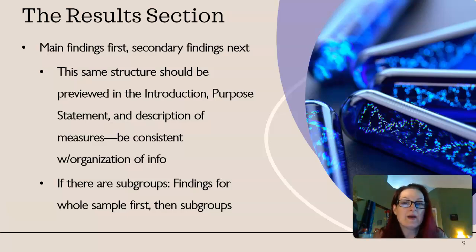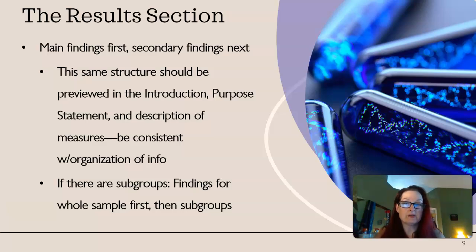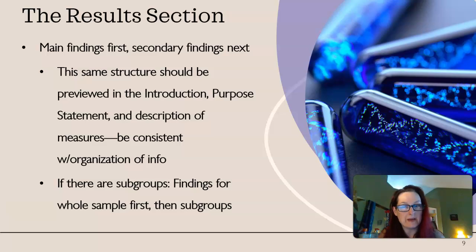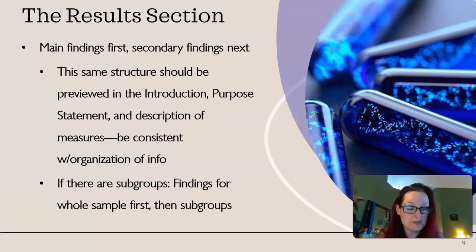Put your main findings first, secondary findings next. That same structure should be previewed in the introduction of your paper — your purpose statement and the description of your measures and methods. Whatever order you present things in, keep that consistent all throughout the paper. If there are subgroups, present the findings for the whole sample first, and then get into your subgroups — whole sample, then subgroups.